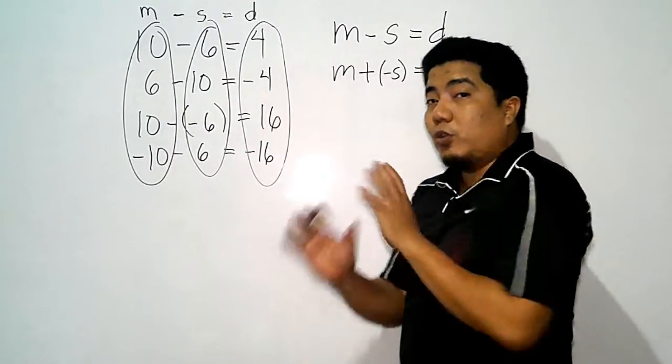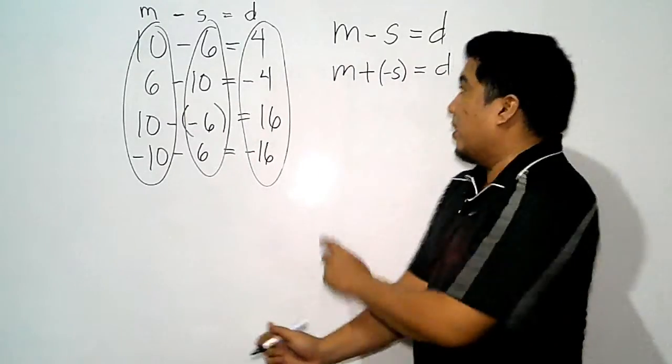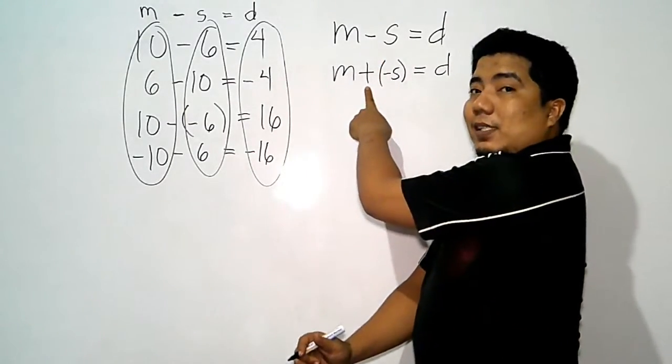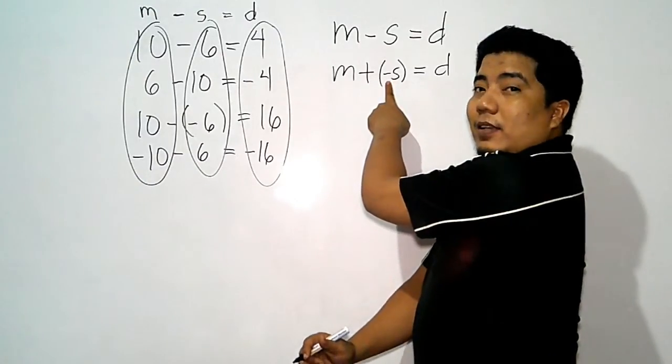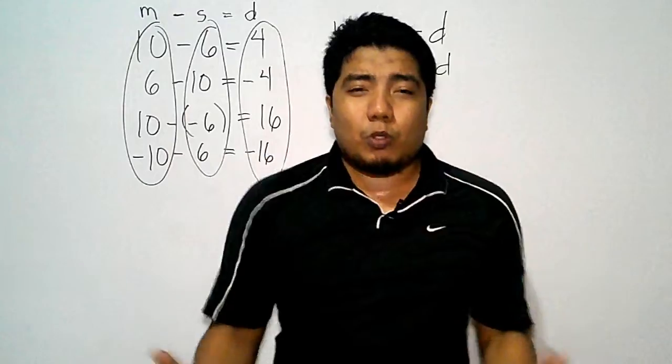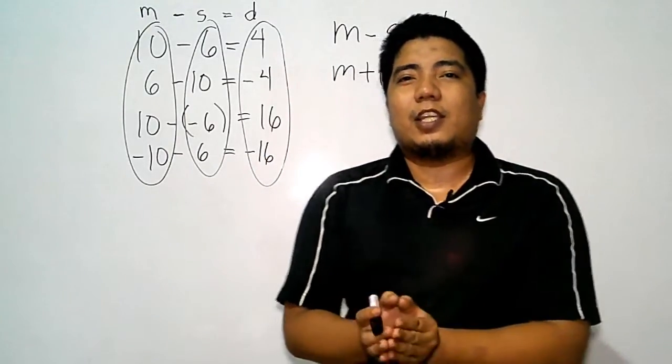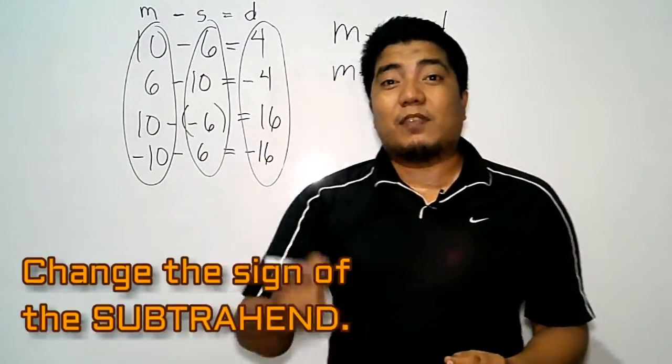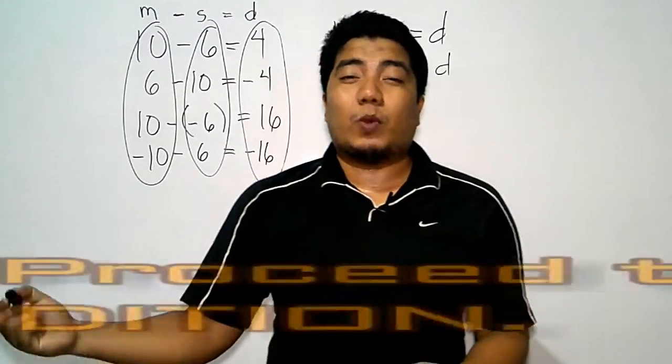Again, the minuend, do not change it, just leave it. The minus will become plus and then your subtrahend will change. So in conclusion, the process in subtracting integers is change the sign of the subtrahend, then proceed to addition.